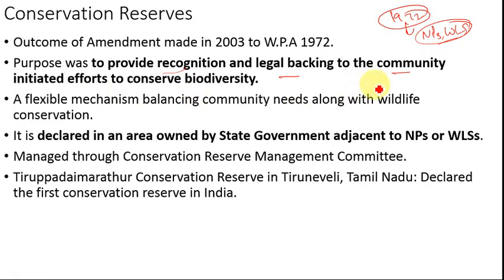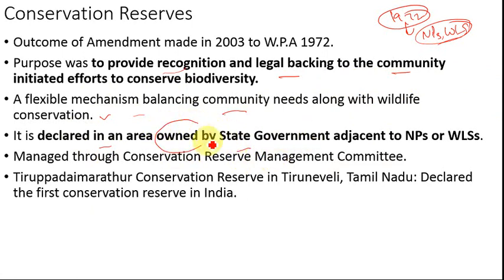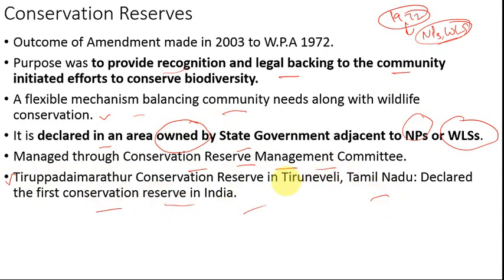Certain communities by themselves volunteer to conserve the wildlife in and around the areas they reside in. To provide them recognition and legal backing, this amendment was introduced. It is a flexible mechanism which balances community needs as well as wildlife conservation. Conservation reserves are declared by the state government only in areas owned by the state government and adjacent to national parks or wildlife sanctuaries. They are managed by a Conservation Reserve Management Committee. The Tirupadai Maradhur Conservation Reserve in the Tiruna Valley, Tamil Nadu, has been declared the first conservation reserve in India.